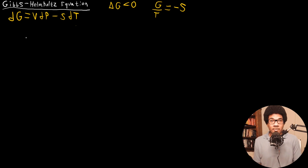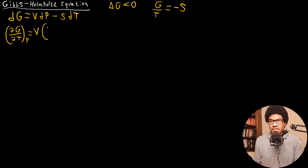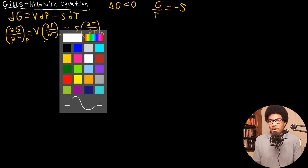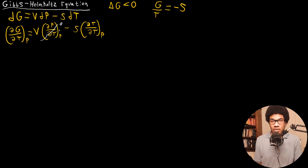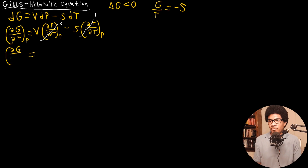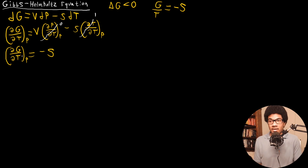If we differentiate the Gibbs energy with respect to temperature at constant pressure — so DG/DT at constant pressure — we have VdP/dT at constant P minus S·dT/dT at constant pressure. This first term goes to zero since we're varying pressure at constant pressure, and dT/dT is one. That just leaves us with negative entropy. So DG/DT at constant P is just equal to negative S.